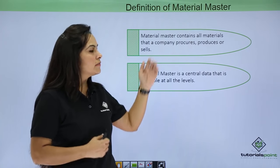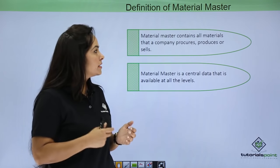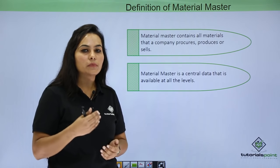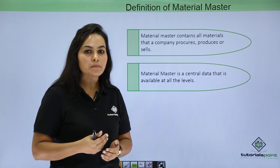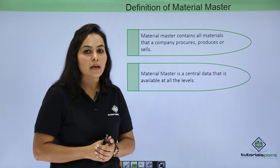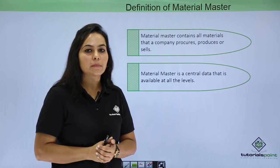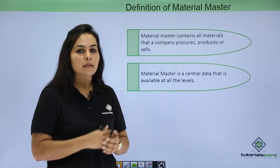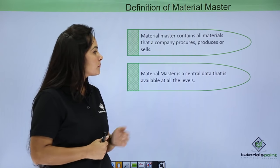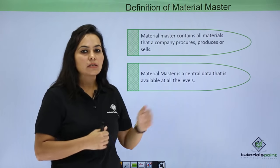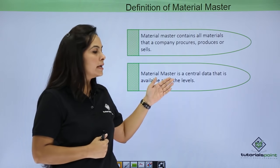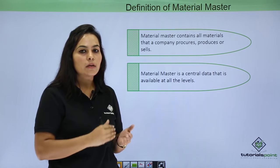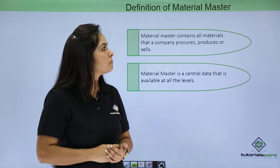Let's start with the definition of Material Master. Material Master contains all the materials that a company can procure, produce or sell. Suppose a company has to procure 100 materials — those 100 materials can be grouped together and they are called the Material Master. Material Master is central data available at all levels: client, company code, plant, and storage location.